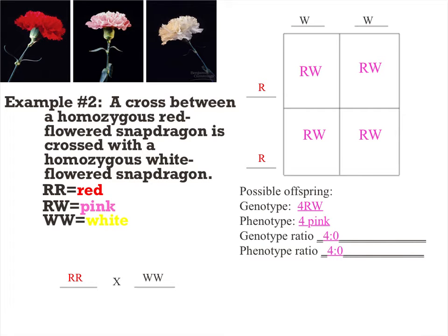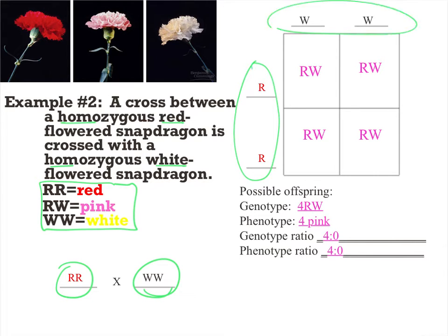Looking at a Punnett square — they gave you a key here. If you crossed a homozygous red with homozygous white, you put them in the Punnett square: one on one side, one on the top, then bring them down and over. All your offspring are going to be heterozygous. So you would have four that are RW, and those RWs are all going to be pink — a hundred percent pink offspring.